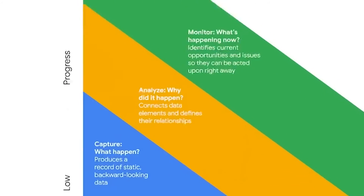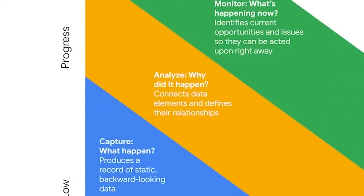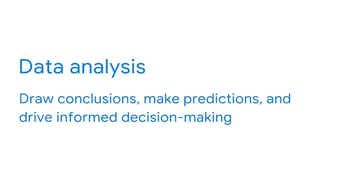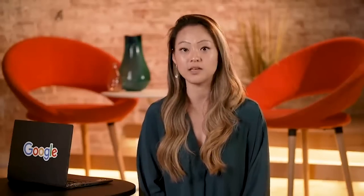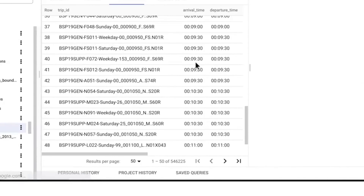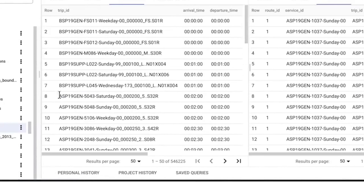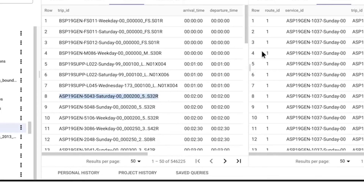However, in the following step, things get better. Which brings me to stage two: analyze — the "why did it happen" part of BI. Data analysis is when we draw conclusions, make predictions, and drive informed decision-making. Because the analyze stage explores why things happen, it's much more likely to result in effective plans and strategies. In this way, it enables BI professionals to better understand key relationships between data points. They do this by examining data more deeply, more broadly, or even side-by-side, in order to identify connections that, at first, might not have been apparent.